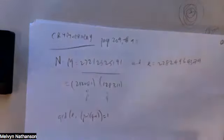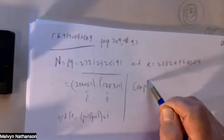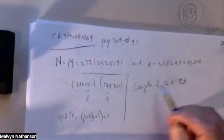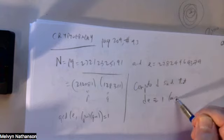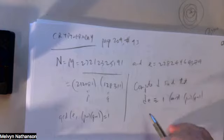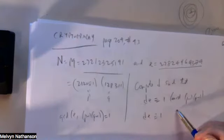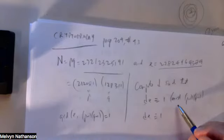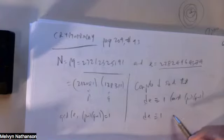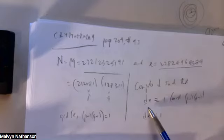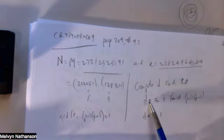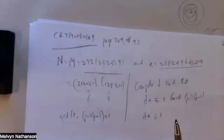So I have to find the number D — I want to compute D such that D times E is congruent to 1 modulo (P minus 1)(Q minus 1). That means finding D such that E times D is congruent to 1 modulo that product. You know how to use the Euclidean algorithm to compute D and write 1 as a linear combination of D and E. But I can't calculate it for you — this is a programming problem for people in computer science.